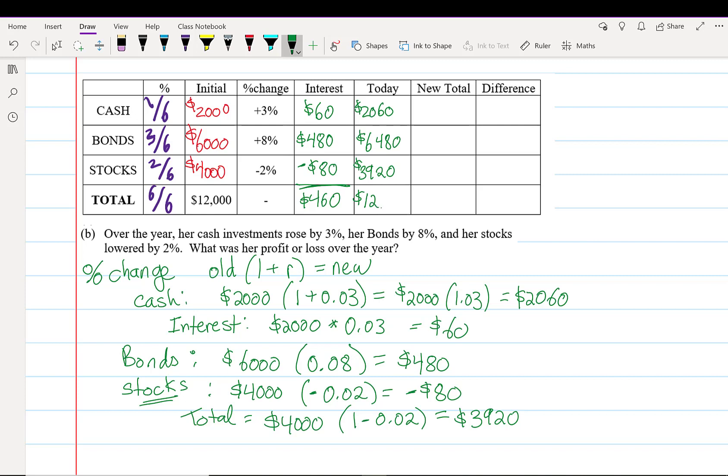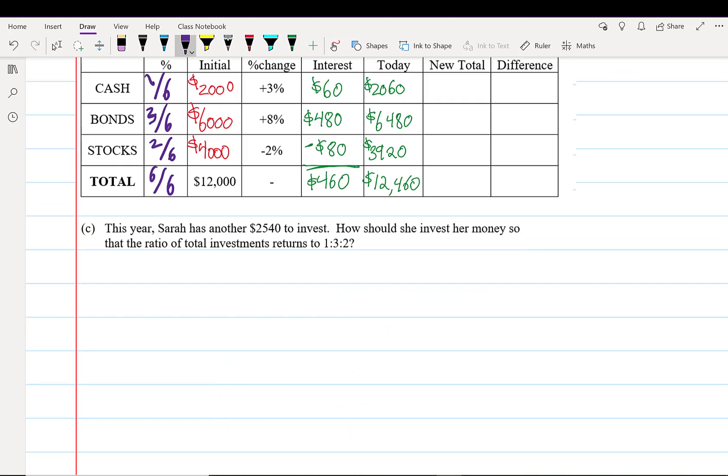Now we get to part C, the final and more difficult part. The problem is that now we have more money, but her money is no longer evenly balanced. Because Sarah lost money in stocks, she doesn't have a ratio of 1:3:2 anymore.